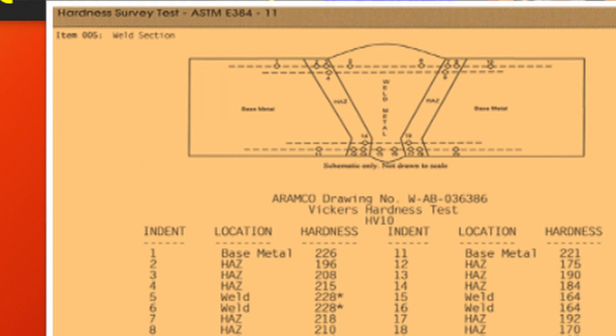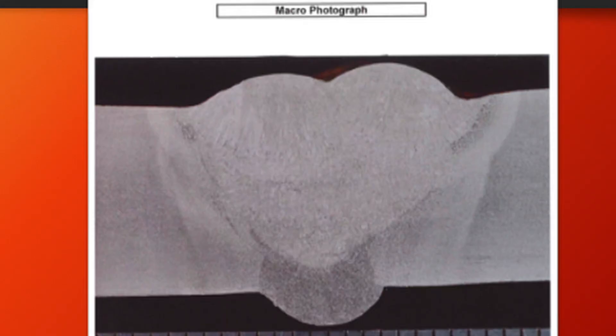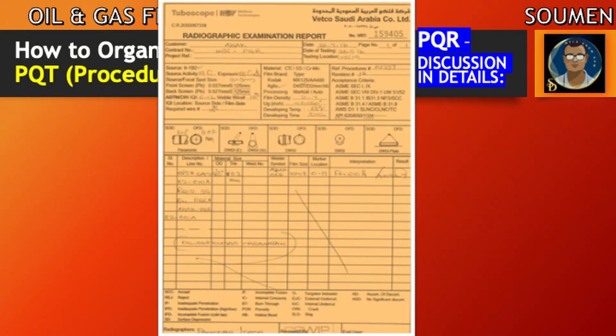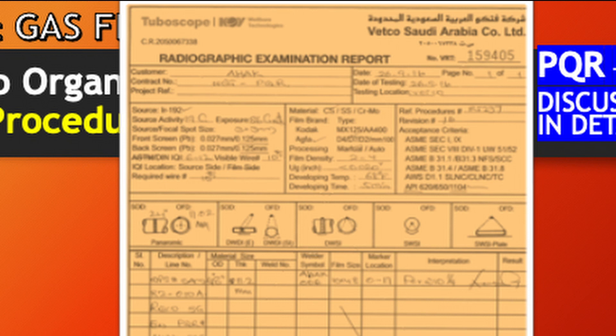The hardness test shows the indentation locations as mandated by the standard — indentations are required in the weld material, the heat-affected zone (HAZ), and the base material. There is a table of readings with maximum acceptable hardness values; if the readings exceed these values, the weld coupon must be rejected by the third party. This macro photograph shows a very well-fused weld.